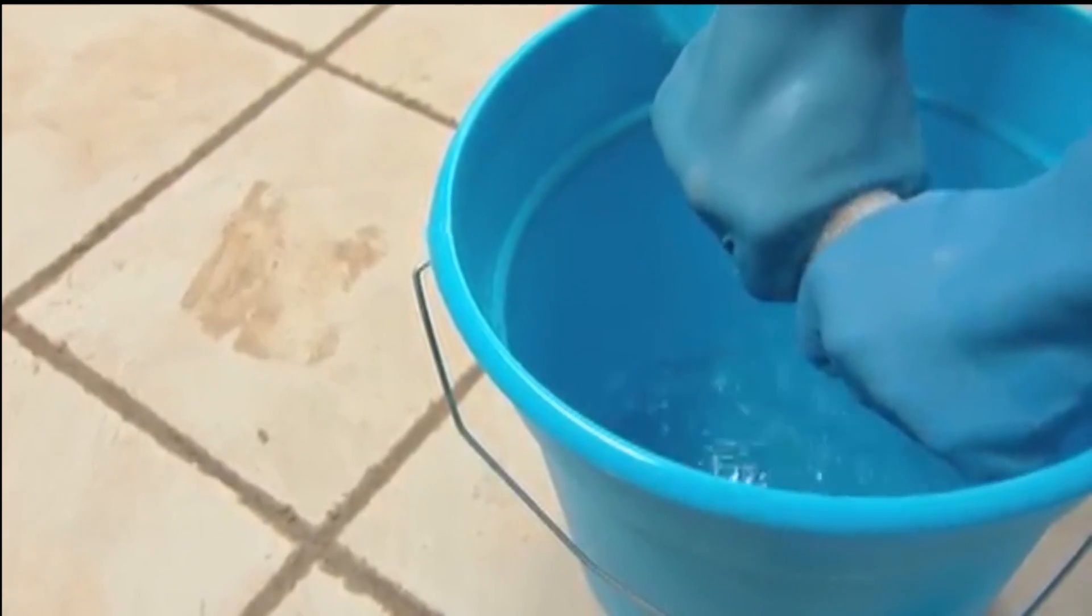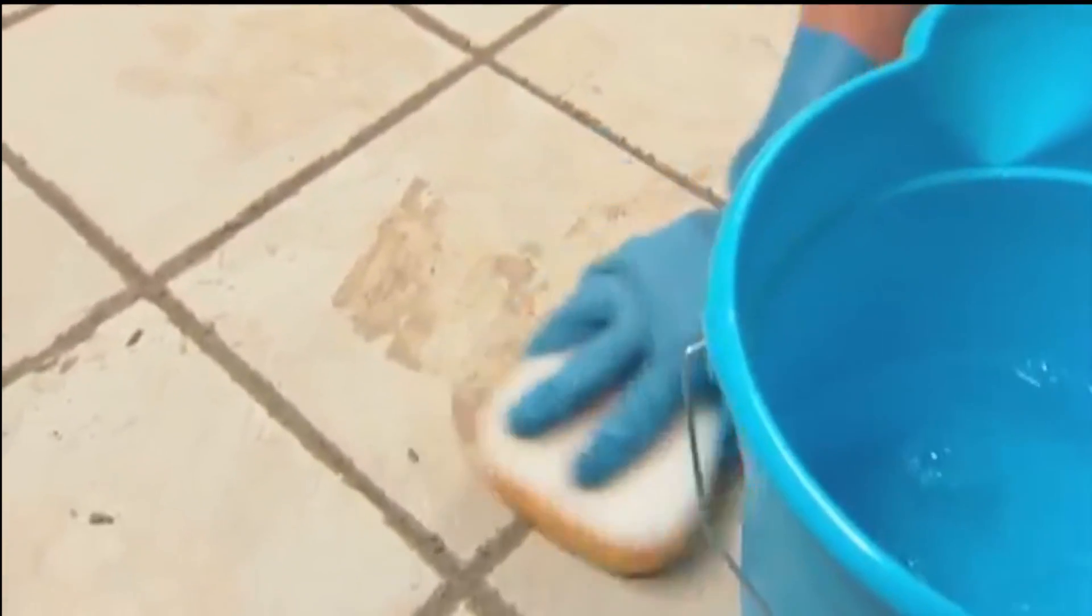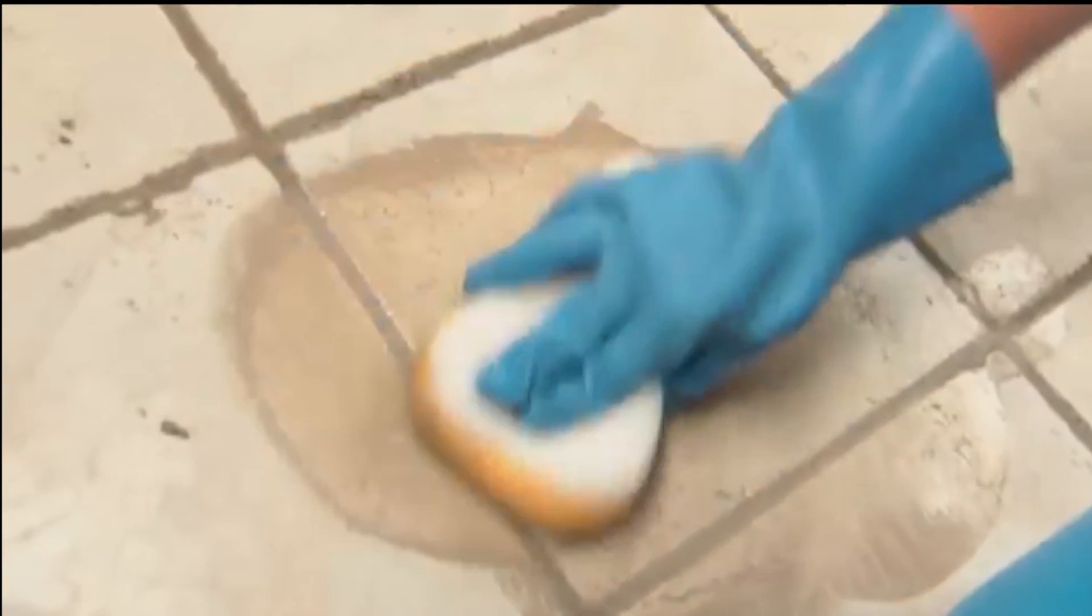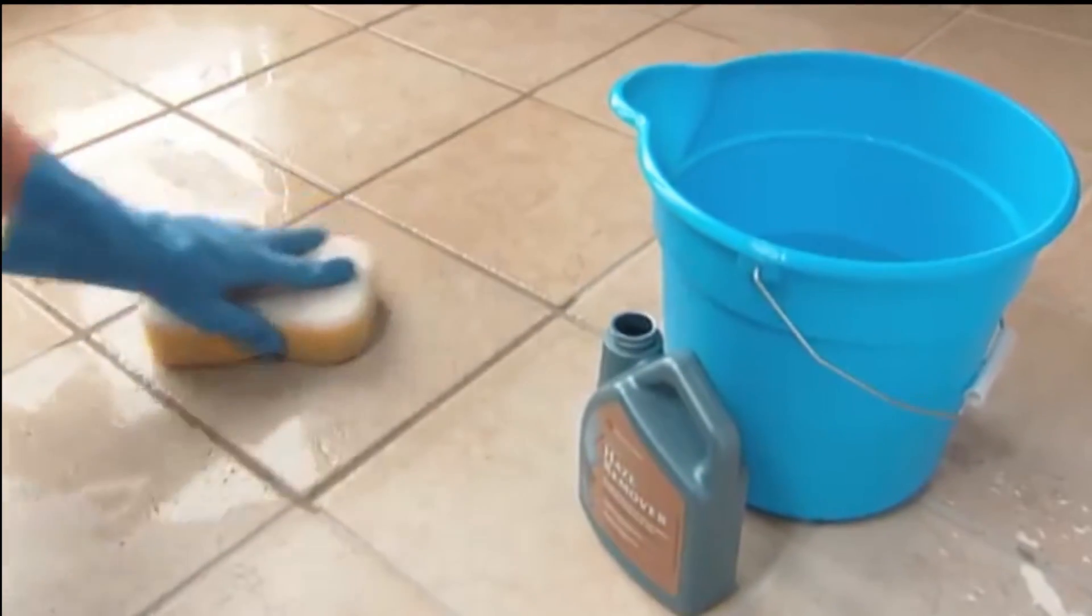After 20 minutes, wipe the grout lines in a circular motion with a sponge and clean water. Any residue that remains can be removed with grout haze remover.